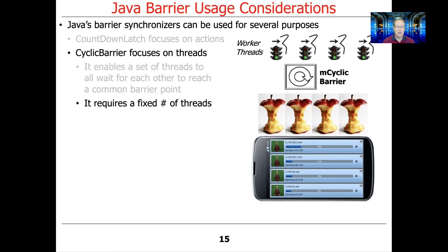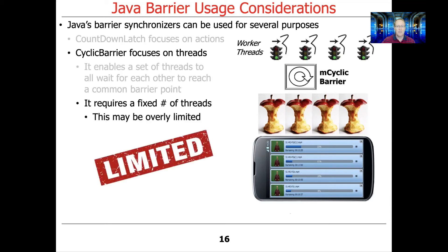Cyclic barrier really requires a fixed number of threads, or parties, and that can be overly limiting. There are situations where you may not know ahead of time how many threads there are, or you may not always have the same number of parties. In those cases, using cyclic barrier is not really the right thing to do.